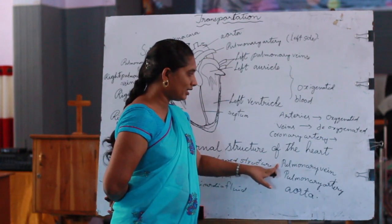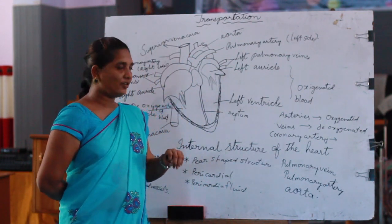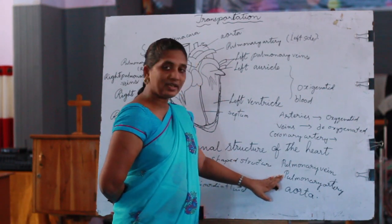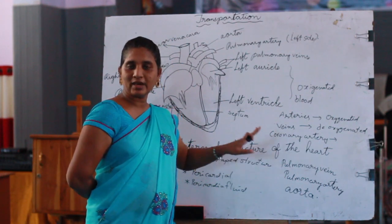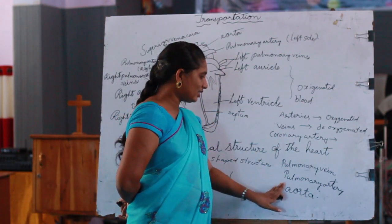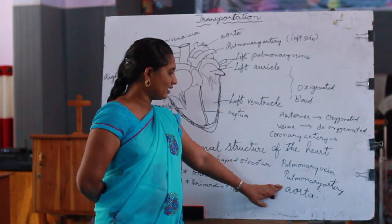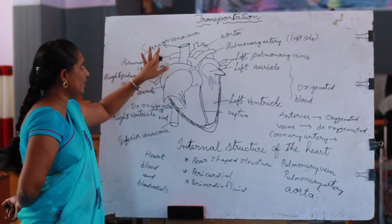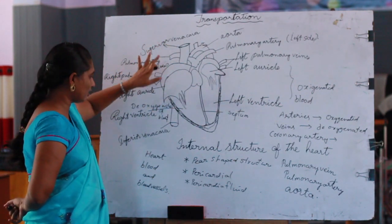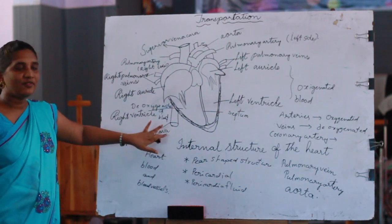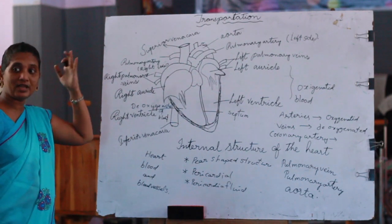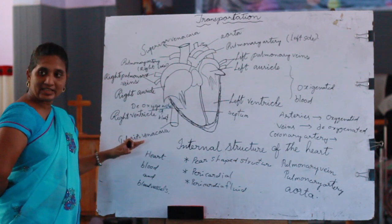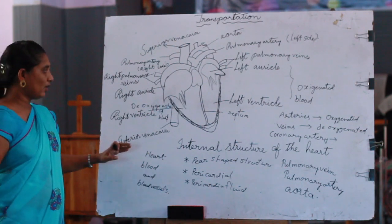The coronary artery is present in the walls of the heart and supplies blood to the muscle walls of the heart. Pulmonary veins supply oxygenated blood from the lungs to the heart. The pulmonary artery sends deoxygenated blood from the heart to the lungs. The aorta is the largest artery in the heart and supplies oxygenated blood. The superior vena cava and inferior vena cava are veins that collect deoxygenated blood from the various parts of the body to the heart.